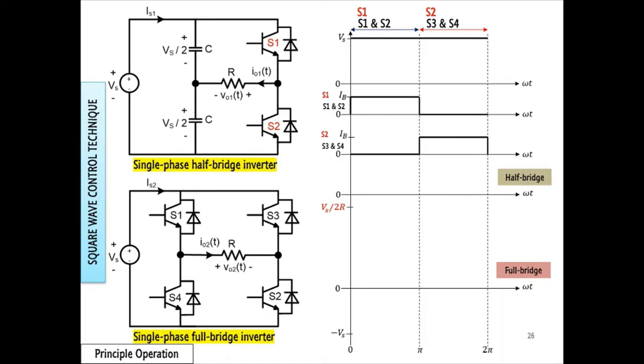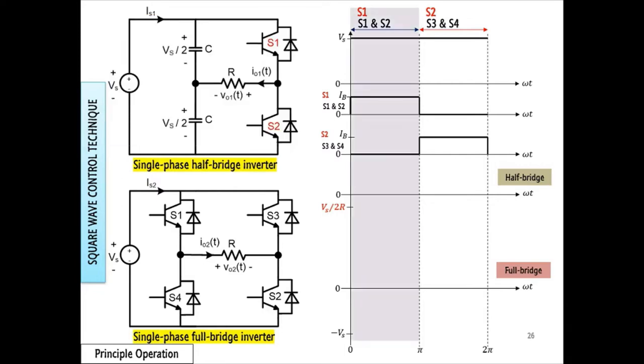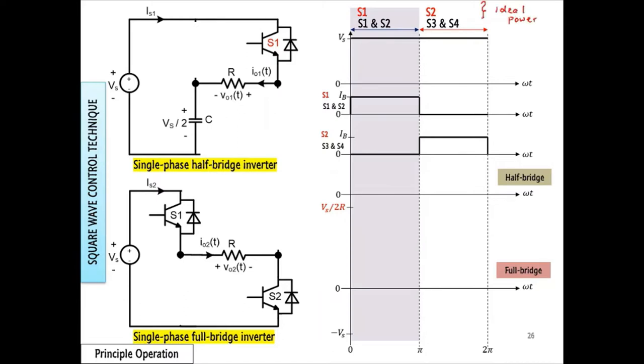Let's start with single phase inverters with the square wave control technique. When the first control signal is applied, the equivalent circuit of both inverters is as follows. By assuming all power switches are ideal, we can apply KVL, KCL, and Ohm's law to obtain voltage and current equations of both inverters.